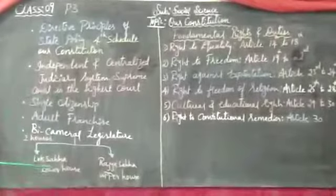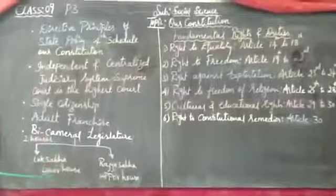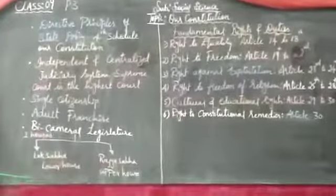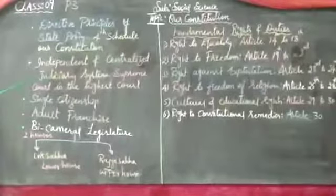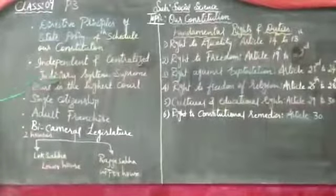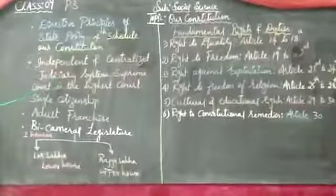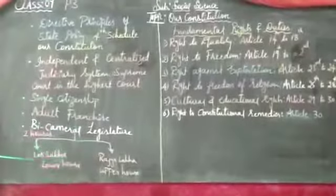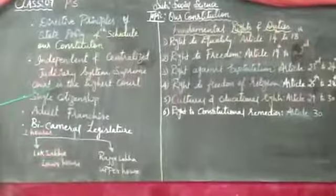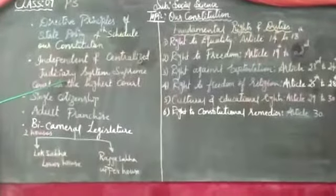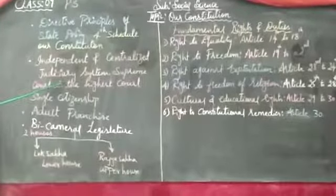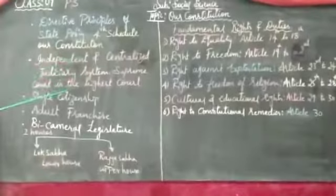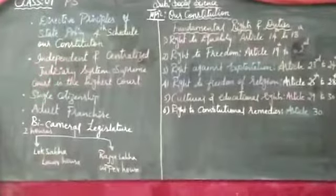If a person is not satisfied, they move to the Supreme Court. Beyond the Supreme Court, there is no other court — you have to accept that judgment. So we are all independent for justice. The executive and legislature, which are in parliament, never interfere in judiciary matters, because justice is our right.